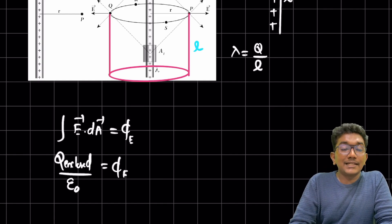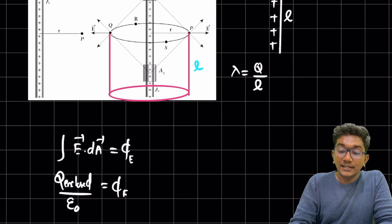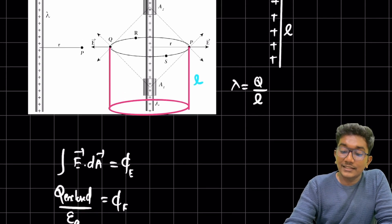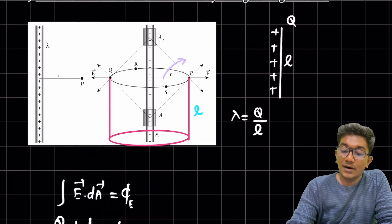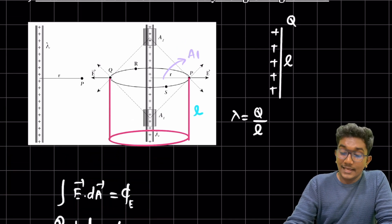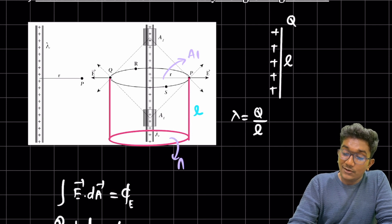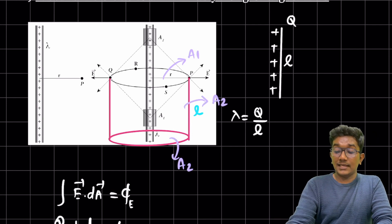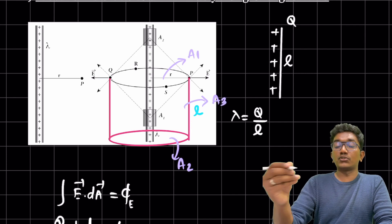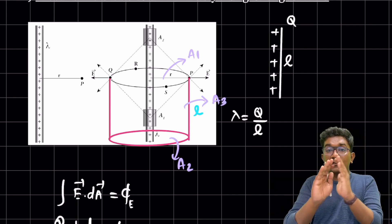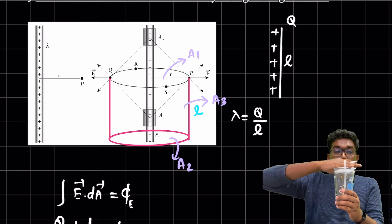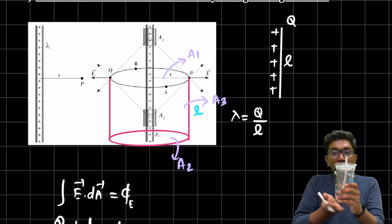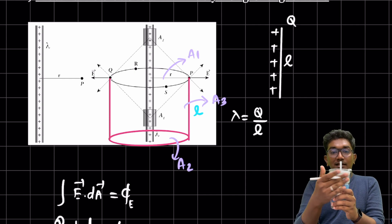Now we need to find the integral of E dot dA, but first note how many areas the cylinder has. Area A1 is the top face, area A2 is the bottom face, and area A3 is the curved surface area of the cylinder. We will evaluate E dot dA for each of these three surfaces separately.